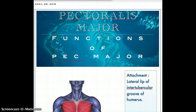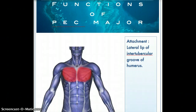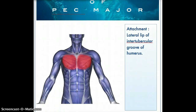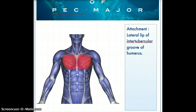This video talks about pec major and its relationship to radical mastectomy. Pec major is a fan-shaped muscle in our chest wall. In men, it makes the bulk of the chest wall. In females, it lies beneath the breast and the fascia. So there is a breast, followed by deep fascia, and then comes pec major.